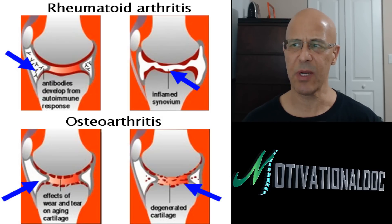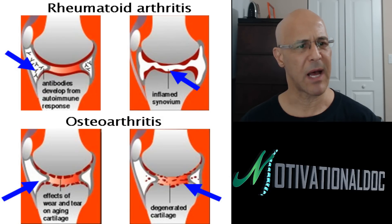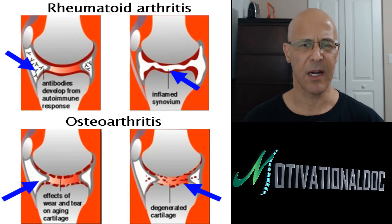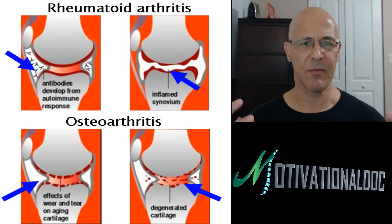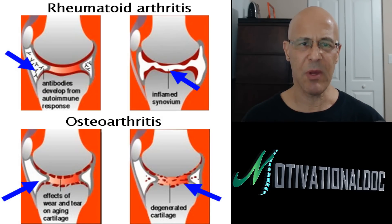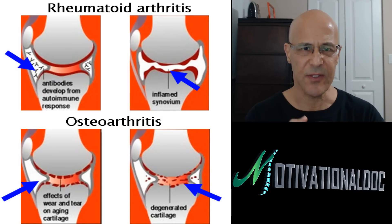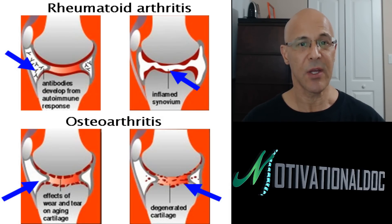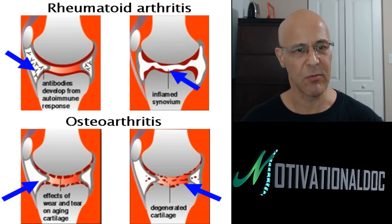Osteoarthritis generally affects the joints of the body where there is wear and tear and weight bearing — being overweight, having knocked knees, putting yourself in a position where stress is accumulating in the back of the shoulders, putting stress in the joints, injuries, falls. Any time there is wear and tear to a joint, you are going to develop osteoarthritis.